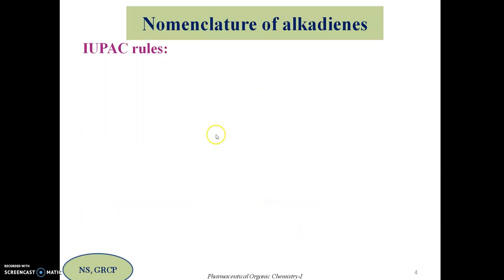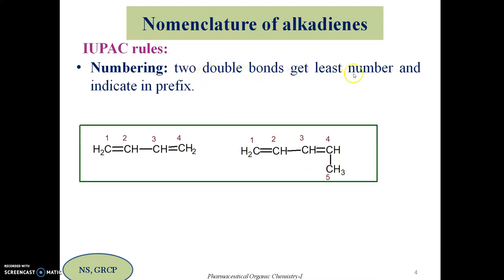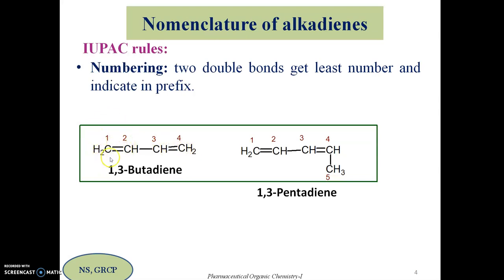The first two rules are identification and naming of the parent chain. The next rule is numbering the chain such that the two doubly bonded carbons get the lowest possible number, and the position of the double bond is indicated in the prefix. For 1,3-butadiene the double bonds are at positions 1 and 3. For the five-carbon molecule, numbering from the correct end gives double bonds at positions 1 and 3, making it 1,3-pentadiene.